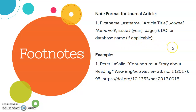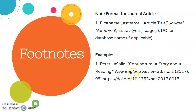Also notice the punctuation between elements — things like commas and quotation marks — and also notice when something is italicized, which means when the font leans to the side. Here's an example based on an actual journal article, so you can see what this looks like with the pieces plugged in, including punctuation and italics where applicable.